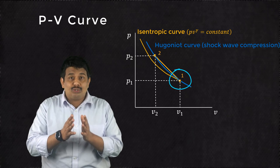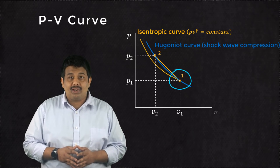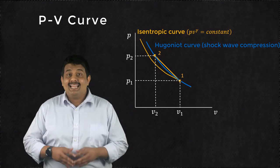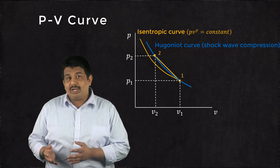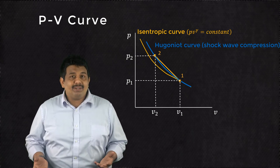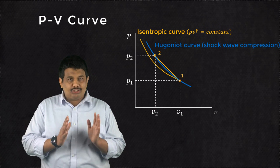Note that the slopes of these two curves at point 1 is the same. This tells us that point 1 on the Rankine Hugoniot curve represents an infinitely weak shock.